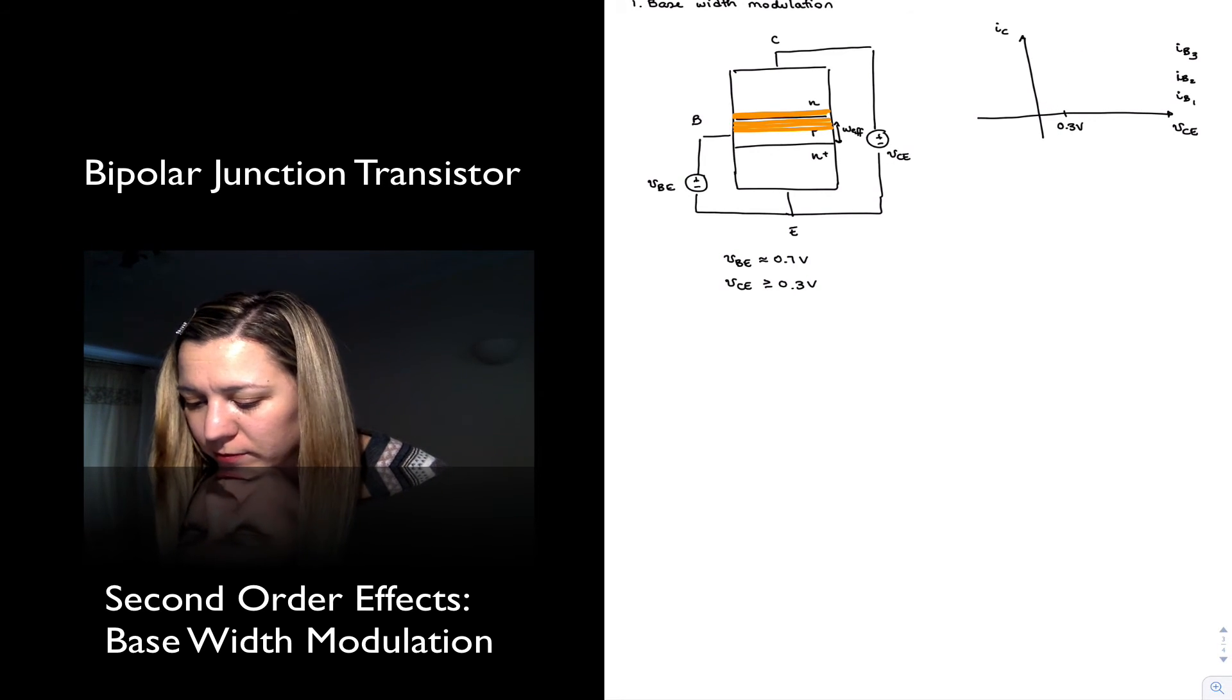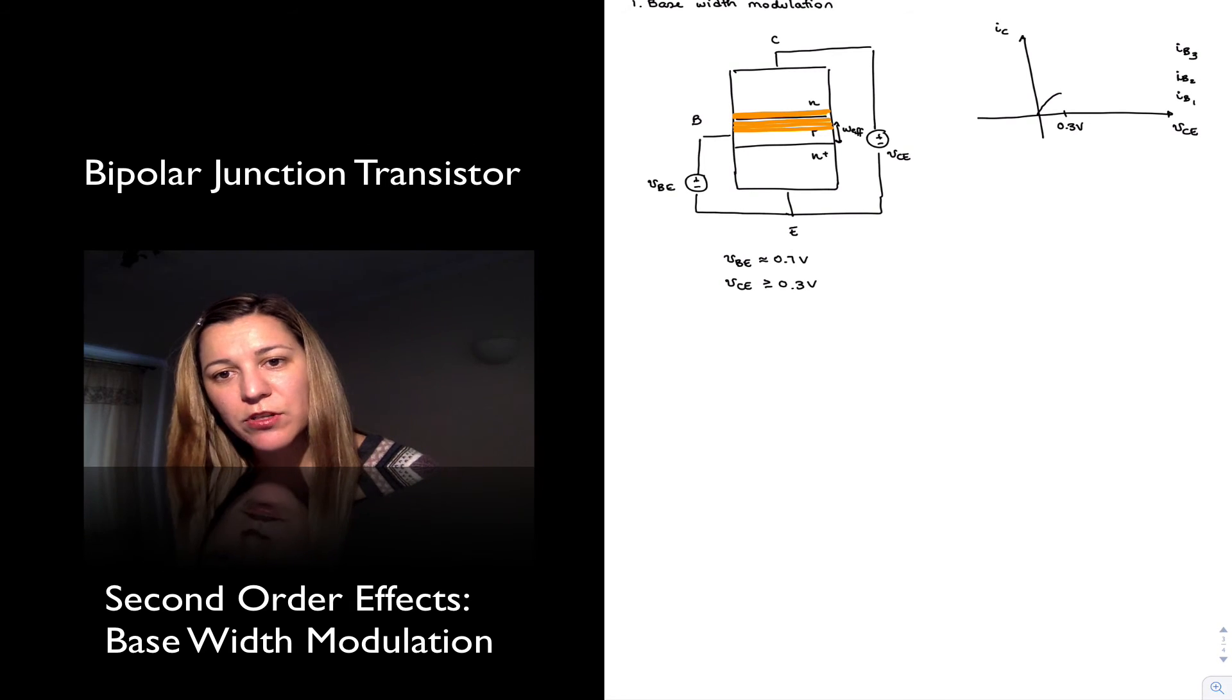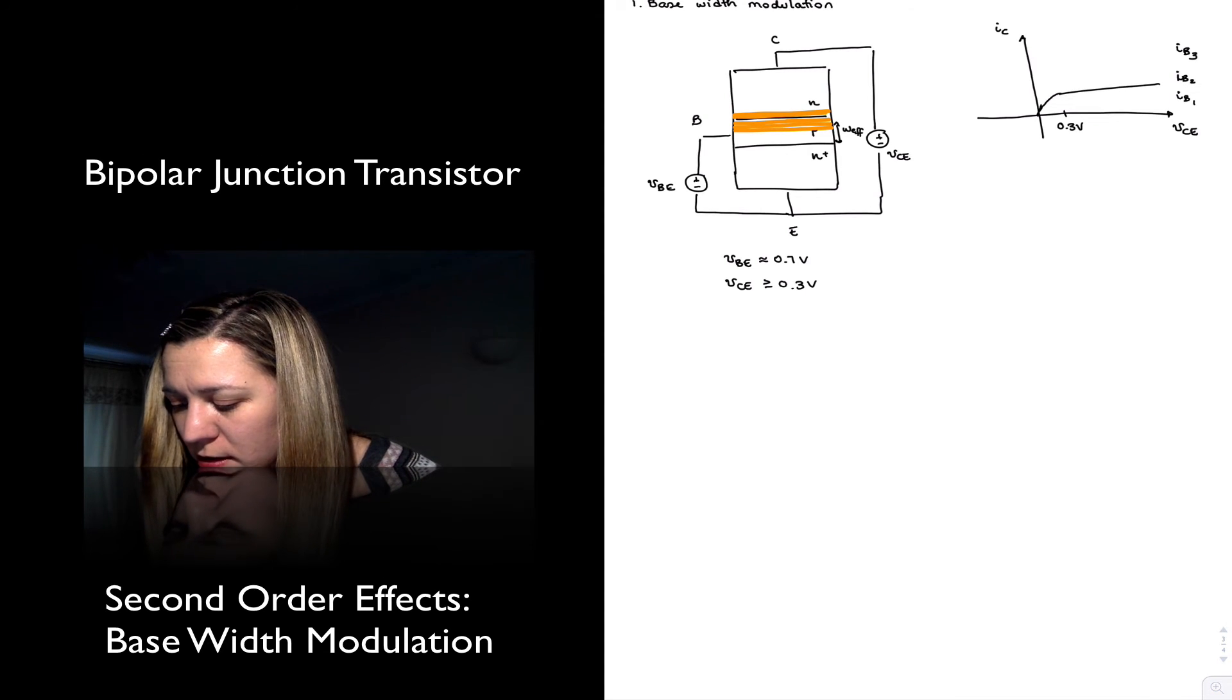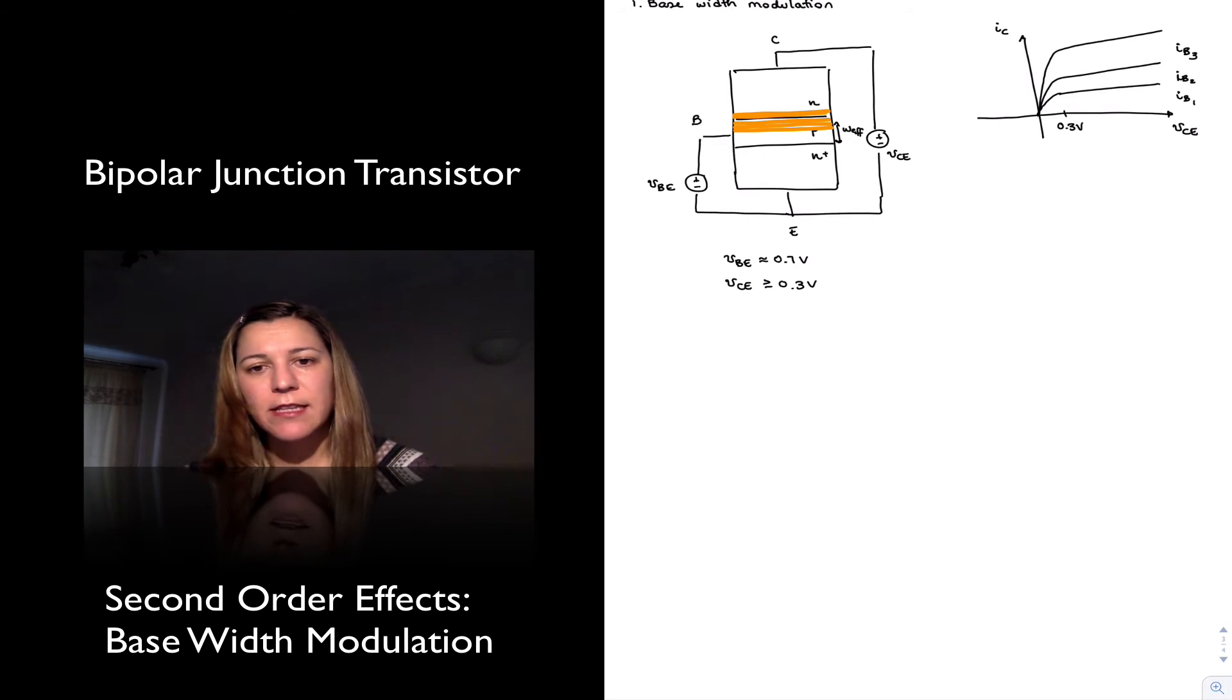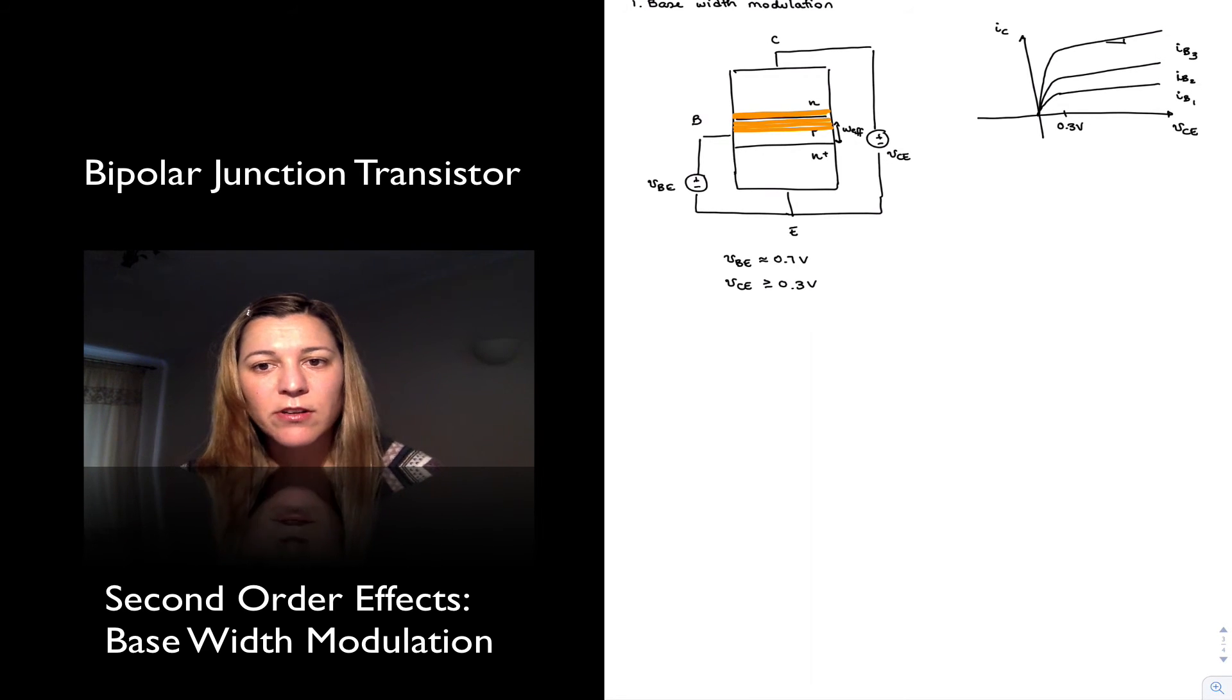And so we can redraw our picture here in a little bit more accurate manner to say, okay, so after we reach the VCE of 0.3 volts, there is actually a slight increase in collector current with increased values of VCE. And I'm exaggerating it here a little bit, but you can see that there is a slope to these lines. They're not totally flat.